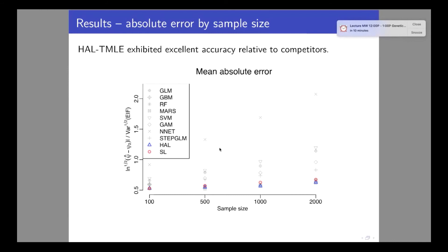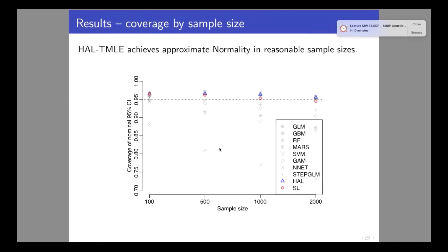We can also look at coverage. In the simulation, going up to dimension 10, we are actually getting very good coverage — up to 95% — for relatively small sample sizes. Super learner and HAL do very well, while using only GLM pays a real price. This remarkable performance is explained by the double-robust nature of these estimation problems, where there is a lot of cancellation in the second-order remainder — so even when you cannot approximate the true function that well, you still do remarkably well with respect to coverage.